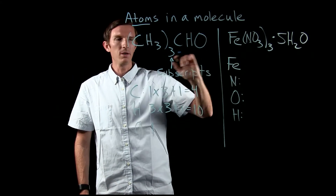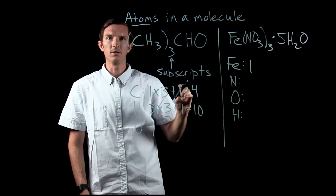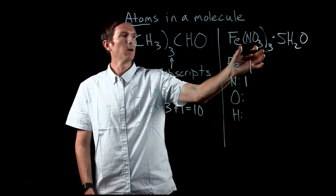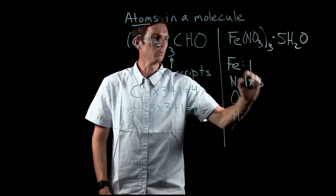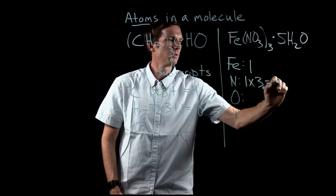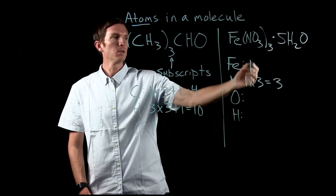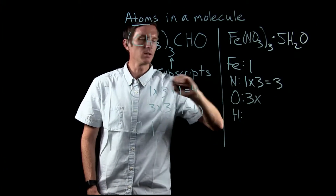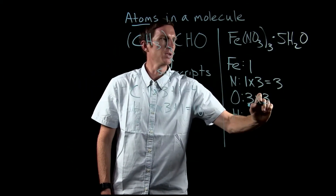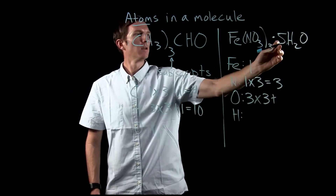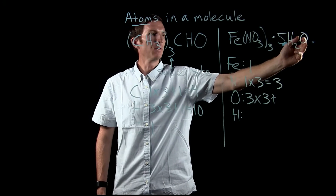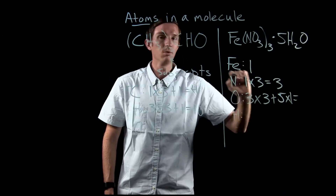For iron, there's no subscript written, which means we only have one iron atom. For nitrogen, we have one nitrogen atom inside the parentheses, multiplied by three because we have three NO3 ions, giving us three nitrogen atoms. For oxygen, we have three oxygen atoms inside the parentheses times three, plus the multiplier in front tells us we have five water molecules, each contributing one oxygen atom — giving us a total of 14 oxygen atoms.